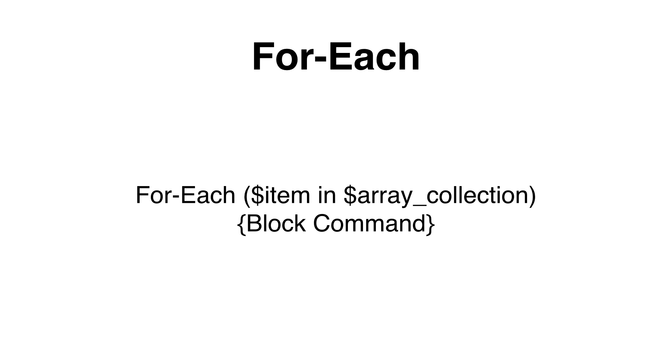This is the syntax for the forEach statement. You need to create an array collection first, and then you can use a variable to execute the command block for each item in that array collection. The for command is less complex than the forEach statement. You specify all of the initial variables — you need to initialize the variable first. Then you specify a condition that needs to be met, and then how it should be repeated. The command block will loop as long as the condition is met. As soon as the condition is not met anymore, the process will stop and the loop will exit.